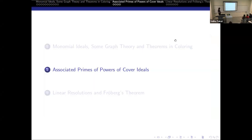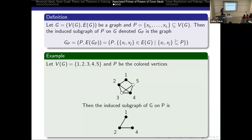Next, we are going to talk about powers of cover ideals and how we can calculate the associated primes of the s-th power of cover ideals. We will need to define induced subgraphs. An induced subgraph is defined by taking a subset of the vertices, keeping the edges between them, and removing any edges connected to vertices not in the subset. So here, we pick the colored vertices, keep the edges between them, and throw out the edges incident with the white vertices.